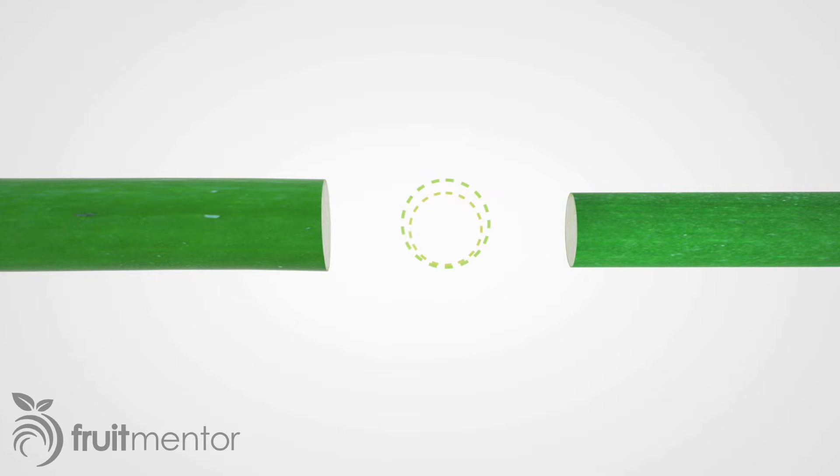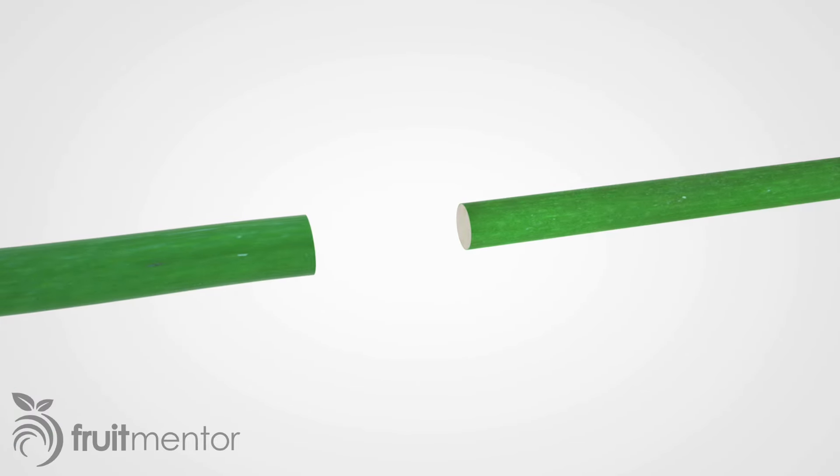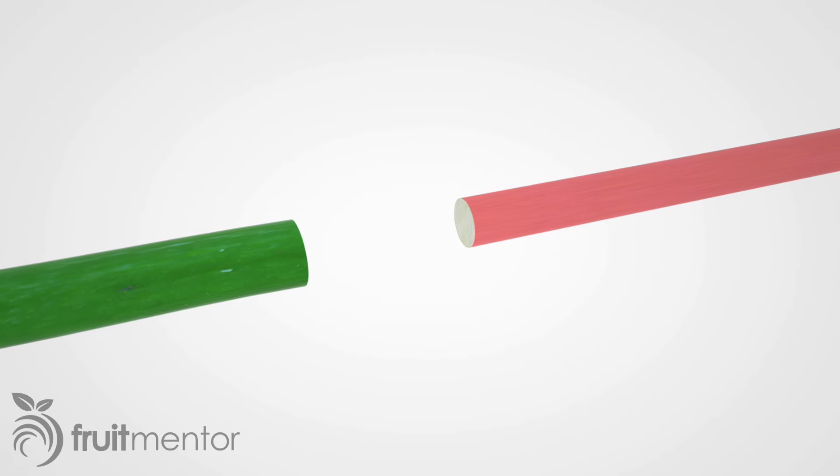The cambium in a fruit tree is a thin layer of plant tissue between the bark and the wood. When grafting trees, the goal is to connect the cambium of the scion to the cambium of the rootstock.